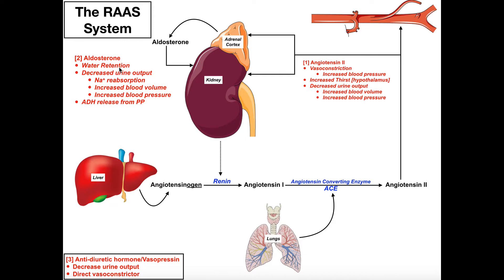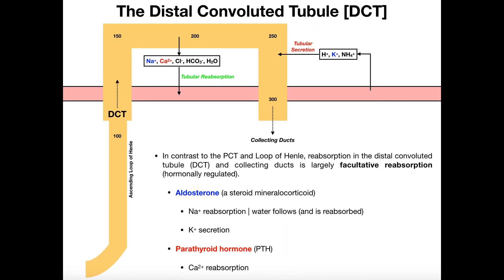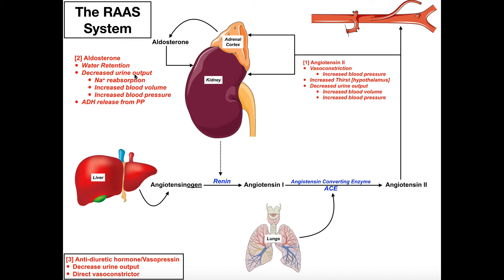Aldosterone overall triggers water retention. The way it works is by acting at the distal convoluted tubule, where it facilitates sodium reabsorption. When you reabsorb sodium, water automatically follows. So overall, aldosterone decreases urine output by facilitating sodium reabsorption, and you get water reabsorption and water retention. Because the stimulus was water loss — low blood volume — we need to get that volume back up. By decreasing urine output, we increase blood volume and blood pressure back to normal levels.